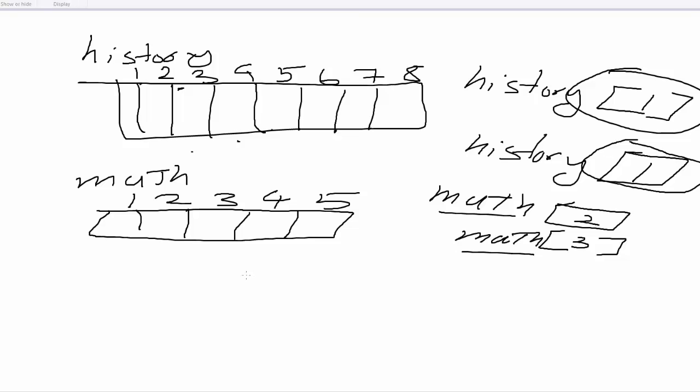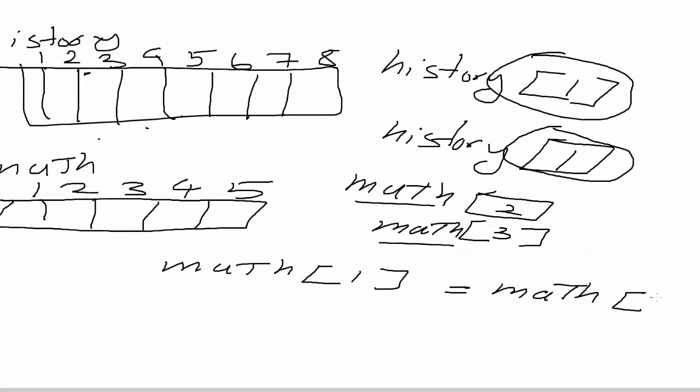See if you understand the new language we use to map different cells. So here I have math, let me see. Okay. This is math[1] equals math[2]. So what I'm trying to say here is I'm trying to say copy the value that is in the second cell of the math shelf into the first cell of the math shelf.